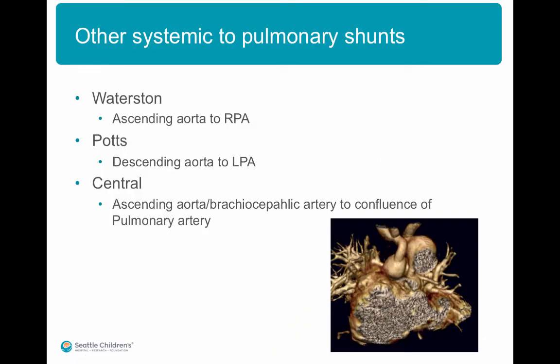The other systemic to pulmonary shunts include the Waterston shunt, which is an ascending aorta to right branch pulmonary artery shunt, and the Potts shunt, which is a descending aorta to LPA branch shunt. The central shunt includes an ascending aorta or brachiocephalic artery to the confluence of the pulmonary artery. The Waterston and Potts shunts are not currently used as they increased pulmonary blood flow leading to pulmonary hypertension.